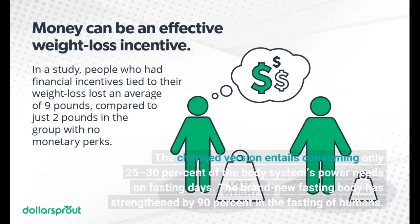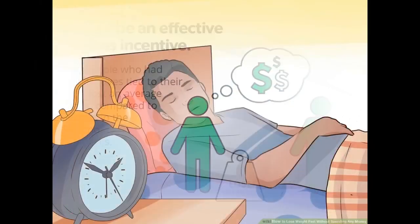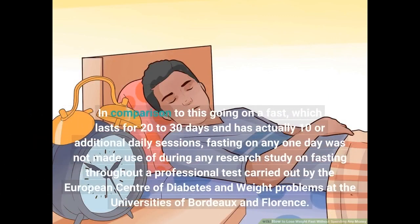The modified version entails consuming only 25–30% of the body's energy needs on fasting days. The new fasting approach has strengthened by 90% in the fasting of humans. In comparison, fasting which lasts for 20–30 days and has 10 or more daily sessions — fasting on any one day was not used during any research study carried out by the European Center of Diabetes and Weight Loss.